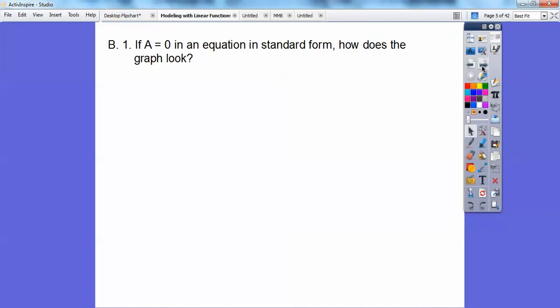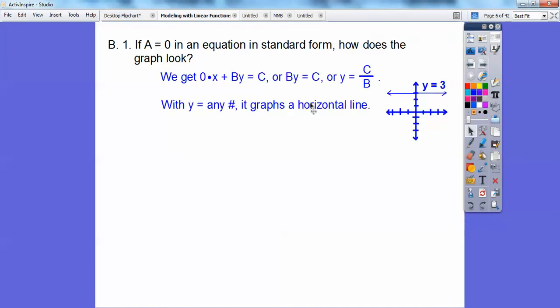So if A equals zero in the equation in standard form, how does the graph look? Well, if A equals zero, then it would be zero X plus BY equals C, or just BY equals C, or Y equals some number, like Y equals 3. So when Y equals any number, it gives us a horizontal graph.